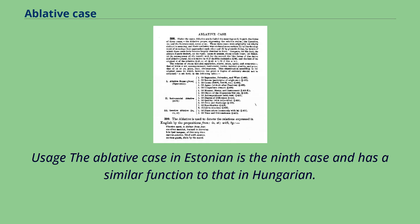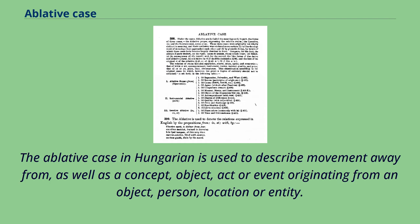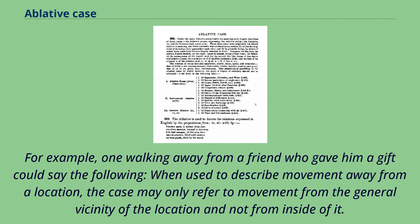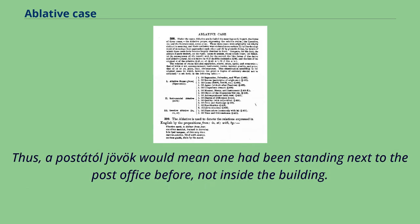The ablative case in Estonian is the ninth case and has a similar function to that in Hungarian. The ablative case in Hungarian is used to describe movement away from, as well as a concept, object, act, or event originating from an object, person, location, or entity. When used to describe movement away from a location, the case may only refer to movement from the general vicinity of the location and not from inside of it — thus, a posted office would mean one had been standing next to the post office before, not inside the building.